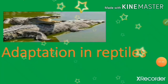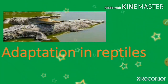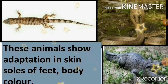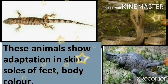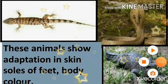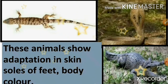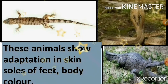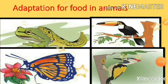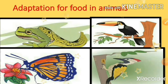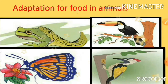Adaptation in reptiles: These animals show adaptation in skin, soles of feet, and body color. Adaptation for food in animals: We can characterize animals as herbivores and carnivores. Special adaptations are seen in each category to make the process of feeding easy.